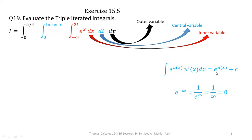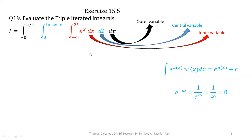For the exponential function, integration is straightforward provided that we have the derivative of the exponent available as a multiplier in the integrand. Note that e raised to the power minus infinity is calculated as 1 over e raised to the power infinity. Since e raised to the power infinity is infinity, 1 over infinity is 0. Now the integration of e raised to power x is e raised to power x, evaluated for the limits minus infinity to 2t.